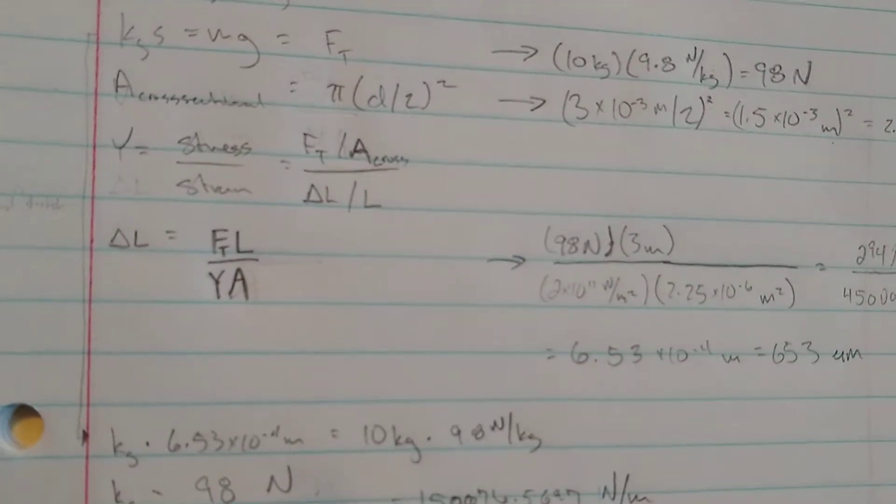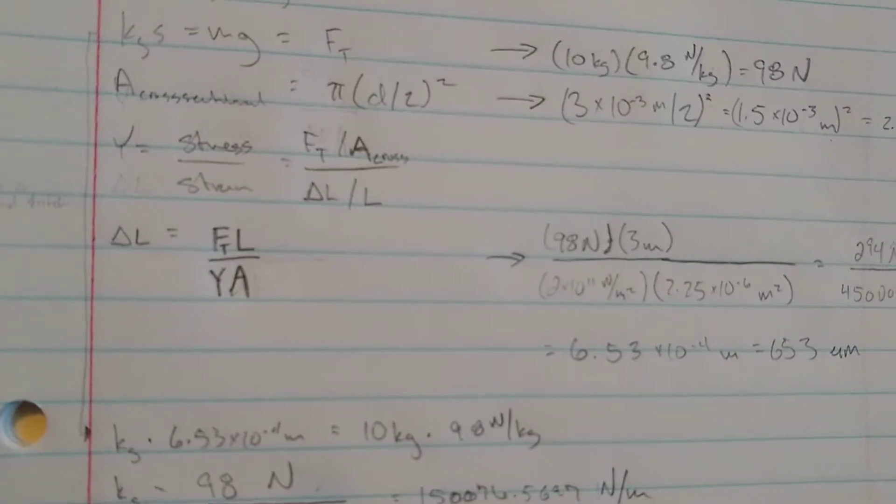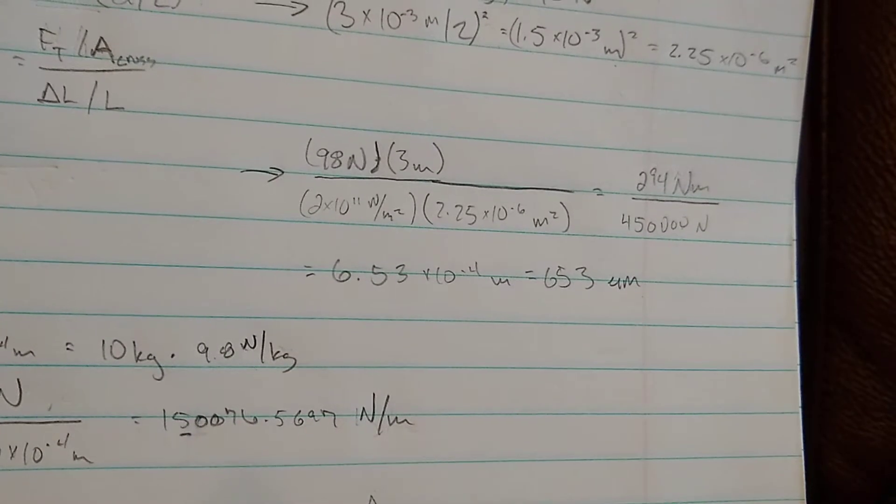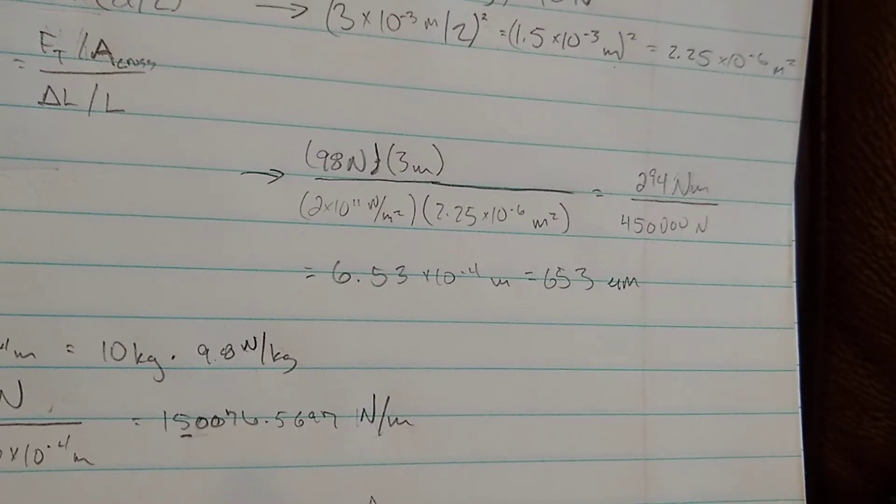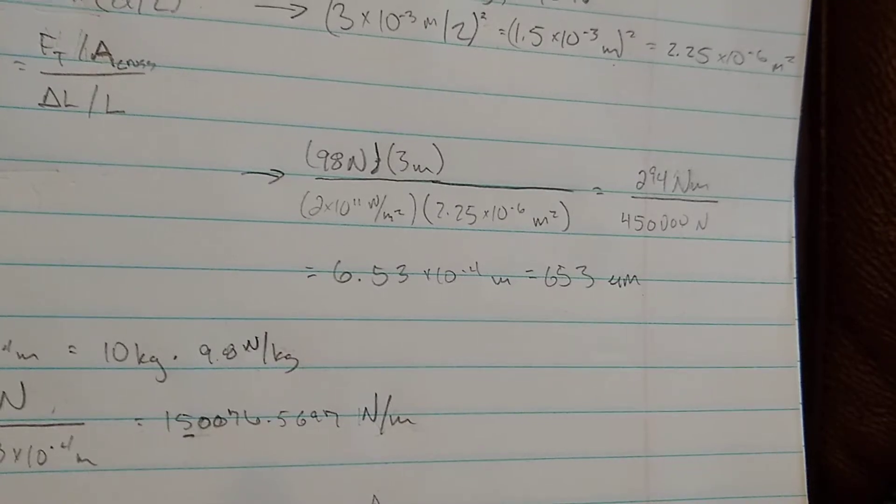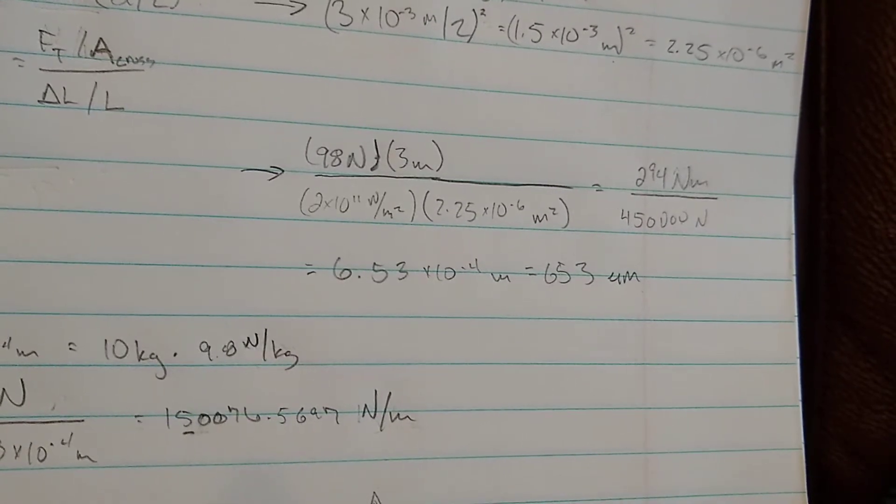Some algebra on Young's modulus will give us an equation for delta L. Here's the math for delta L. Turns out to be a really small number, 653 micrometers.